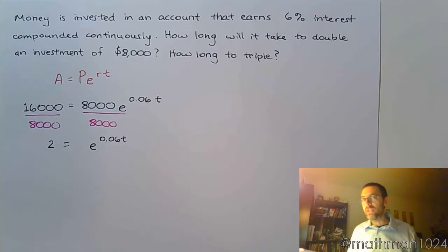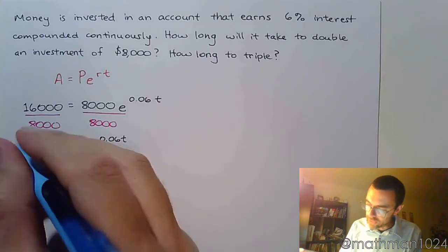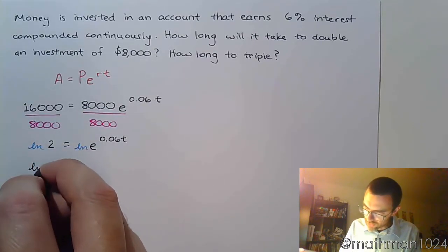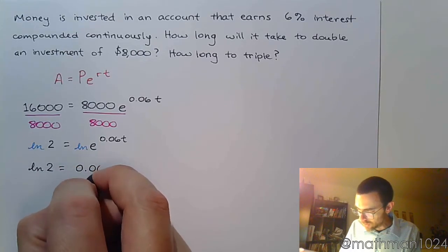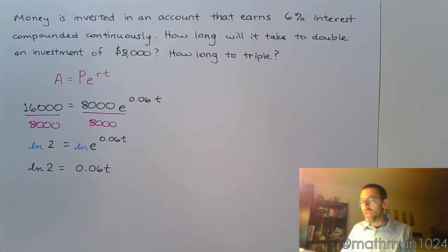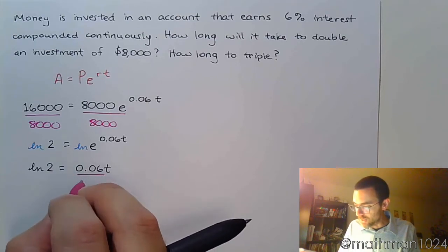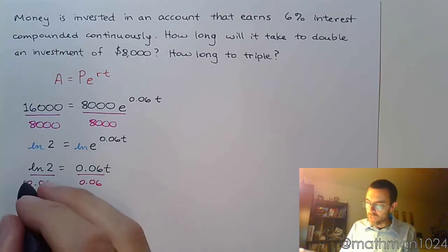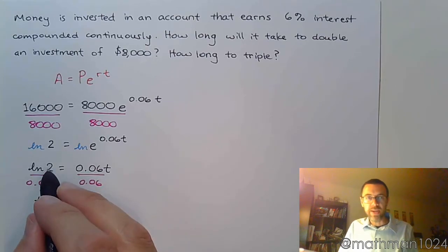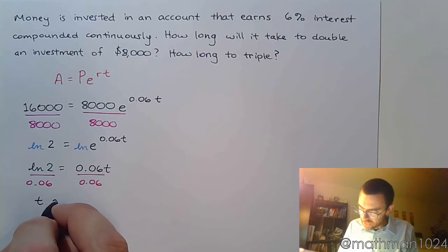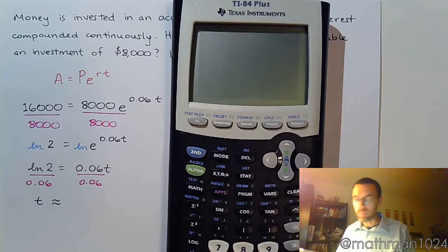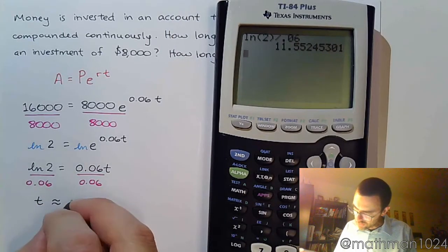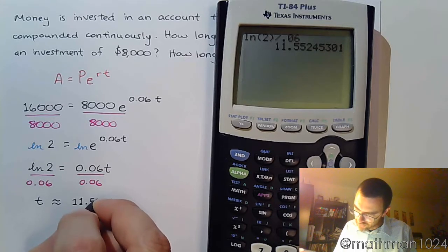Now we need to find T. Since T is in the exponent, this is where we take the natural log of both sides and bring that power out in front. So we get: natural log of two equals 0.06 times T. Dividing both sides by 0.06 gives us T equals the natural log of two divided by 0.06, which is approximately 11.55 years.